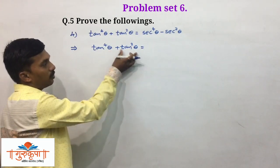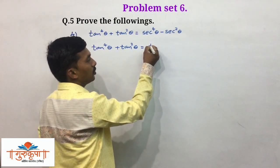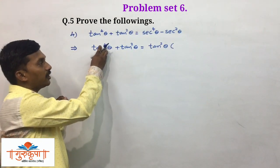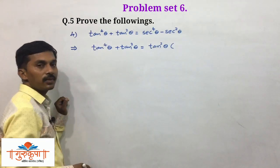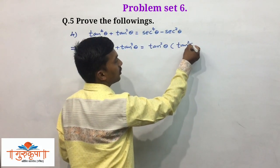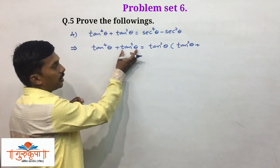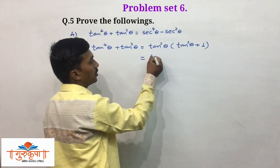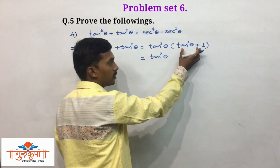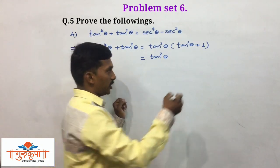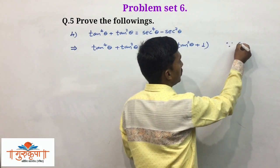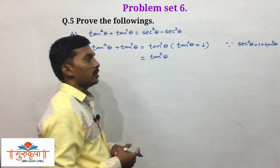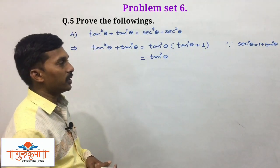We take tan squared theta as common from both terms. Inside the bracket, from tan to the power 4 theta we take tan squared theta common, so tan squared theta remains. Plus, since we already took tan squared theta as common from the second term, we have 1 there. So we have tan squared theta times (tan squared theta plus 1). In place of (1 plus tan squared theta) we write sec squared theta, using the identity sec squared theta equals 1 plus tan squared theta.